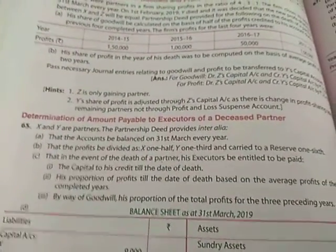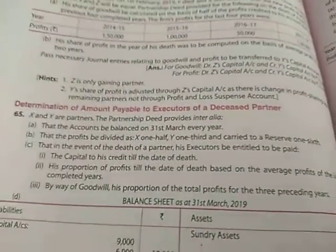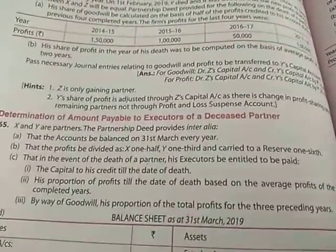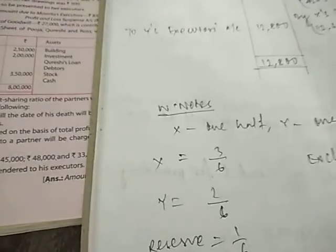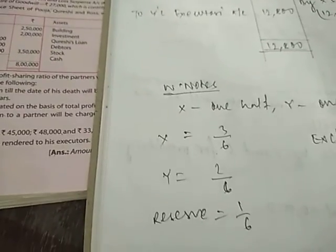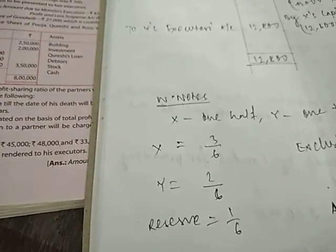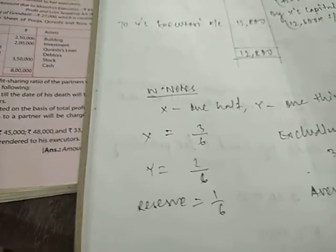That the accounts are balanced from 31st March every year. The profits should be divided as X one half, Y one third, and carried to reserve one sixth. That means one half to X, that is 3 by 6 to X, one third to Y, that is 2 by 6 to Y, and one sixth to reserve.